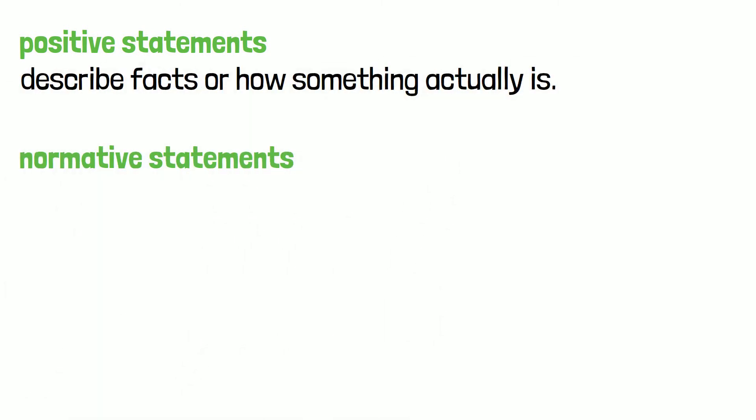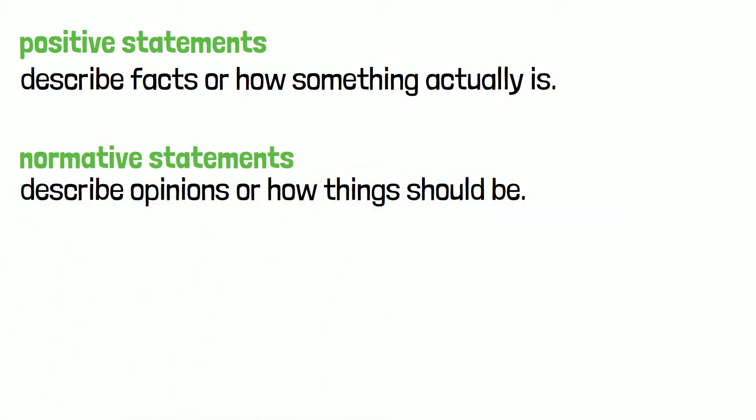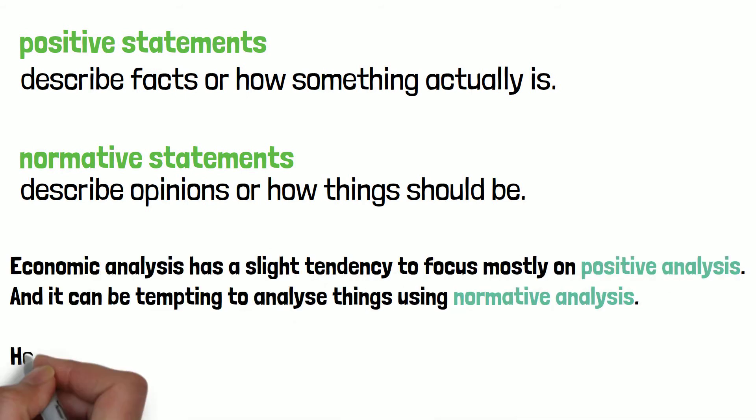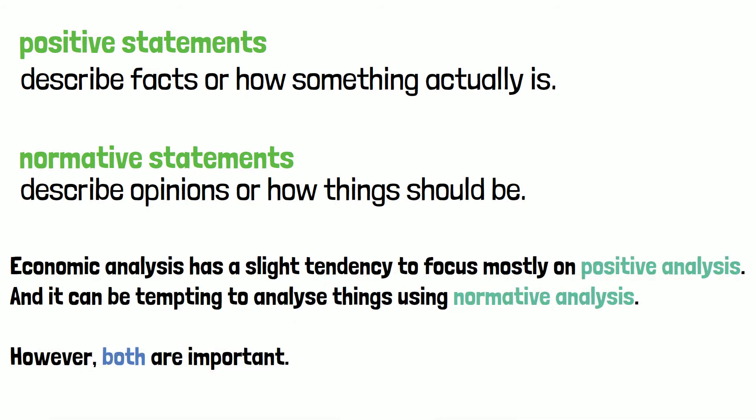There are two types of statements in economic analysis: positive statements and normative statements. Positive statements describe facts, or how something actually is. A normative statement describes opinions, or how things should be. Economic analysis has a slight tendency to focus mostly on positive analysis, and it can be tempting to analyze things using normative analysis. However, you shouldn't think that one type is more important than the other — both are really important.